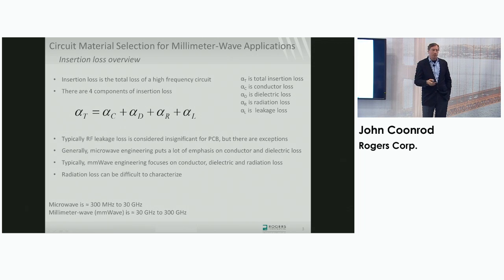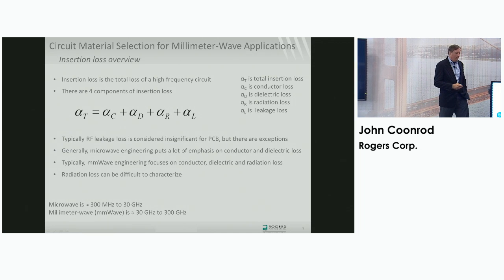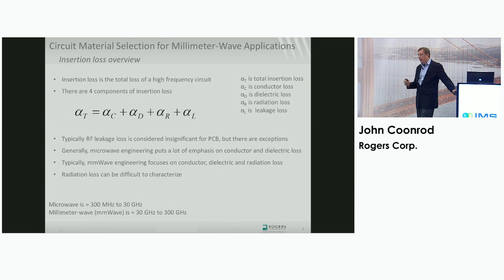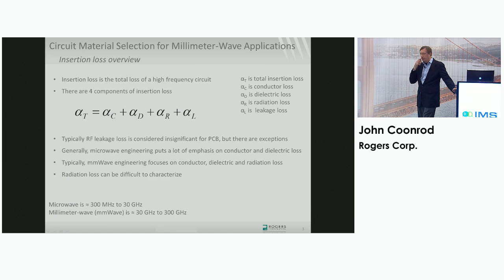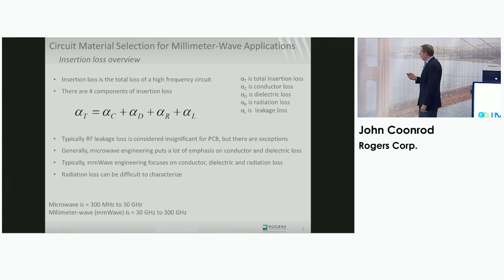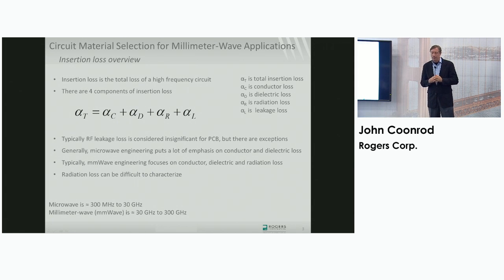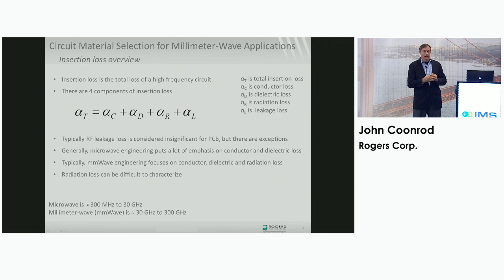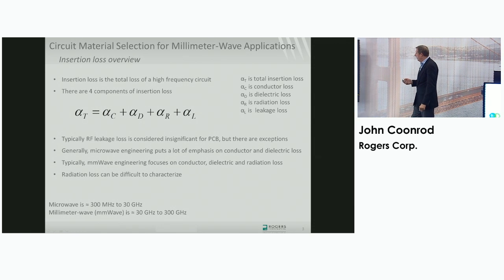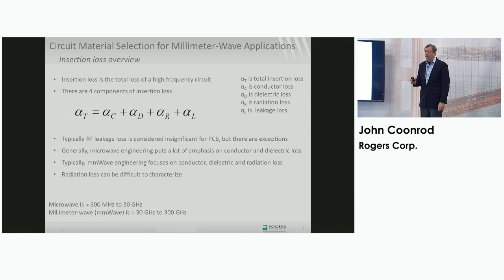Insertion loss for a microstrip transmission line is made up of four different components: conductor loss, dielectric loss, radiation loss, and leakage loss. For today's discussion, I'm not really going to talk about leakage loss much — it's usually not a big deal with printed circuit board materials having very high volume resistivity, though there are definitely some exceptions. I'll focus more on conductor losses and dielectric losses.